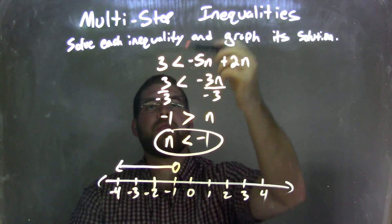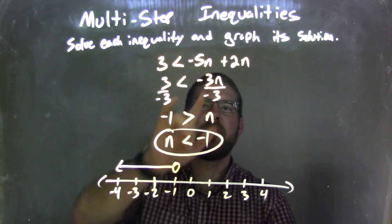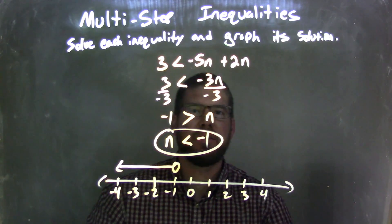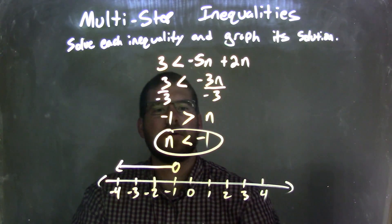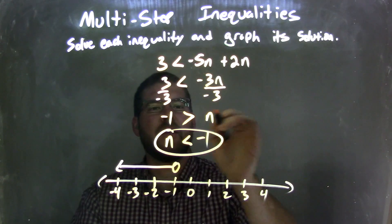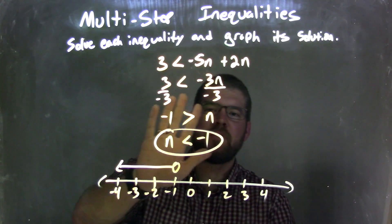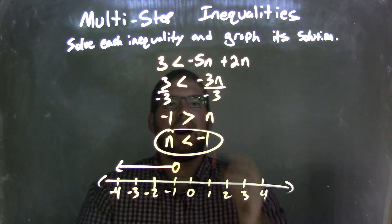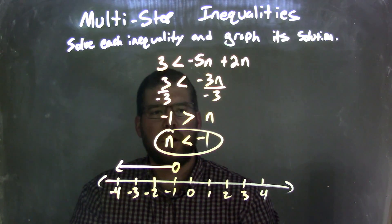So let's recap. We had 3 is less than negative 5n plus 2n. I combined negative 5n and 2n together to get negative 3n. And then I divided by 3 to both sides, leaving me with n on the right and negative 1 on the left. And I had to flip the inequality, because I was dividing by a negative over that inequality.